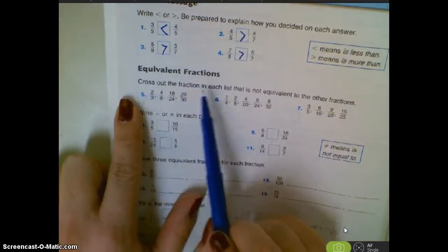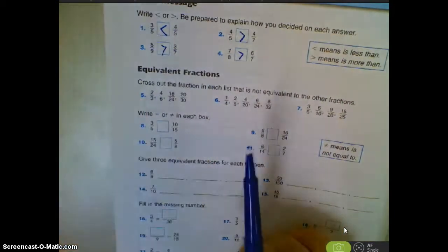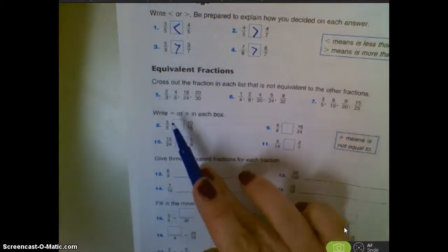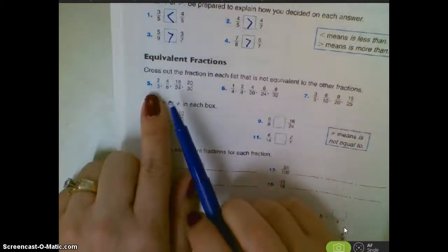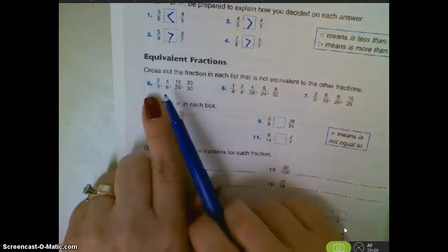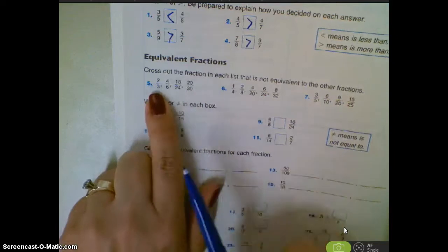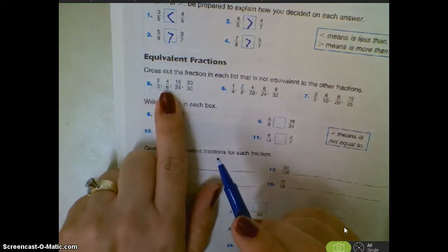On this one, it says cross out the fractions in each of the lists that is not equivalent to the other fractions. So in this case, we're looking for fractions that are equivalent. So two-thirds, if I double that, I would get 4/6.